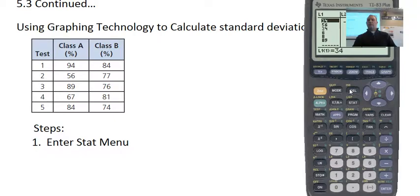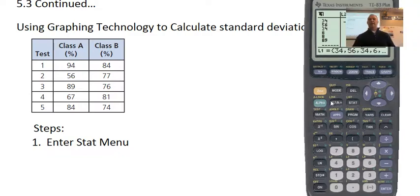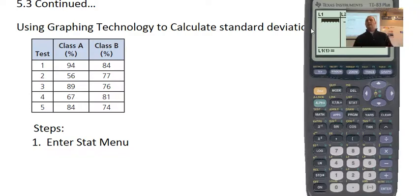When you get to this menu, you may see lists that have numbers in them. If you want to clear a list, do not hit delete — that list will be gone forever and I'm not sure I know how to get it back. Go up to L1 or whichever list you want to clear, hit clear and then enter, and it will be empty. You don't have to be in L1, but I'm going to be using L1 so it'll make it easier.